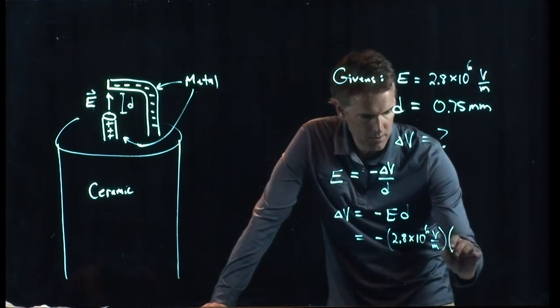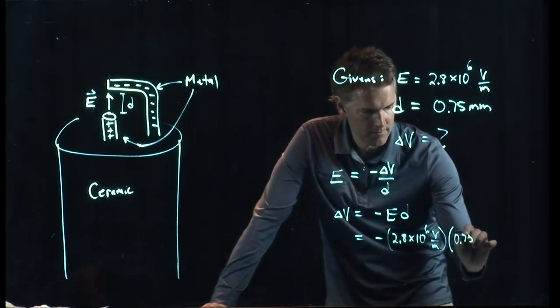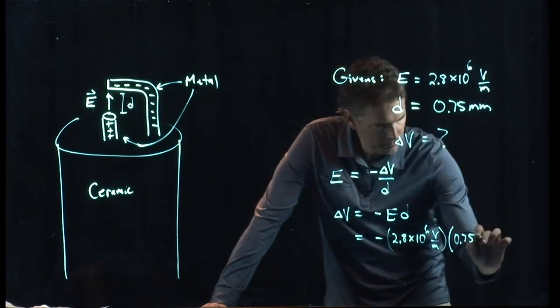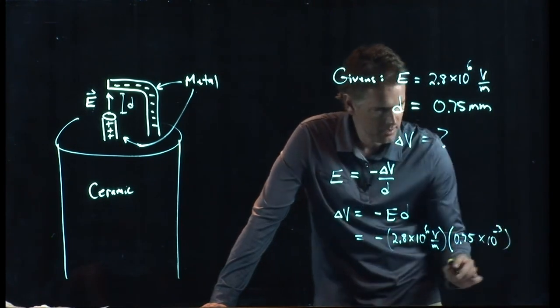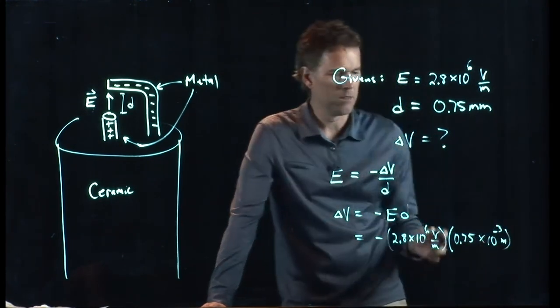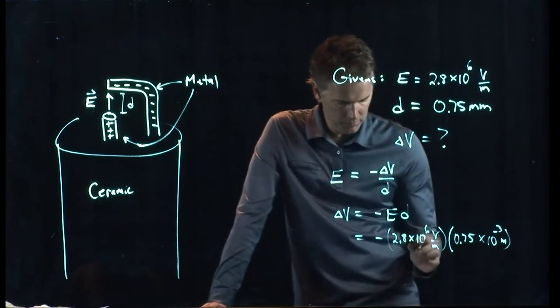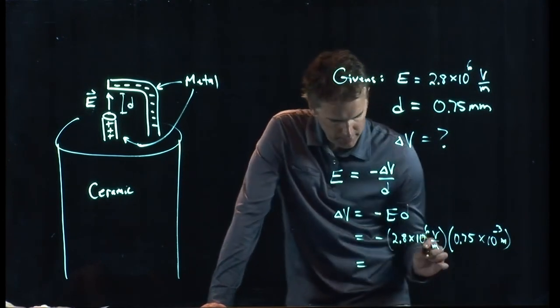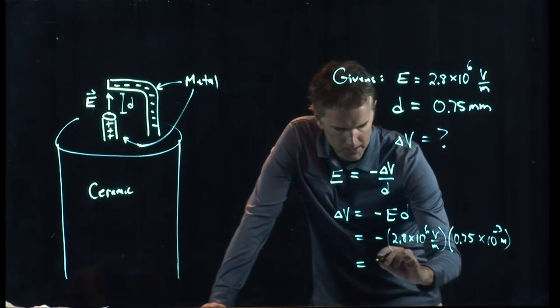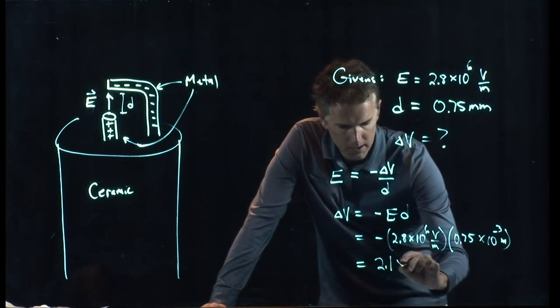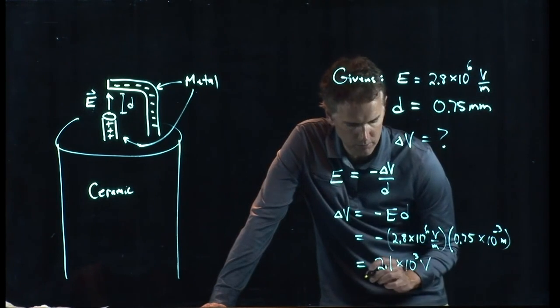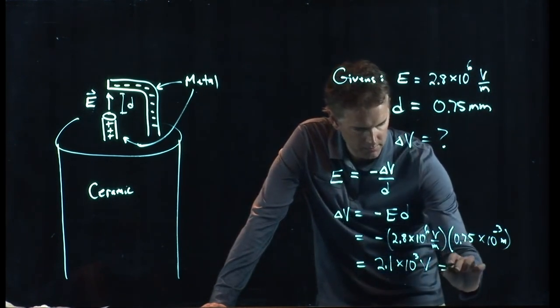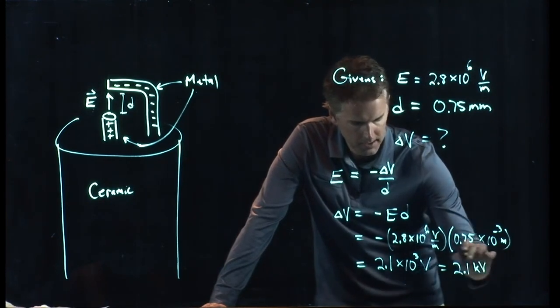D is 0.75. And it's millimeters, so we have a times 10 to the minus 3 meters. The meters cancel out and we're going to end up with volts. And I've already run these numbers, so I'll just tell you what we get. We get 2.1 times 10 to the 3 volts, which is 2.1 kilovolts.